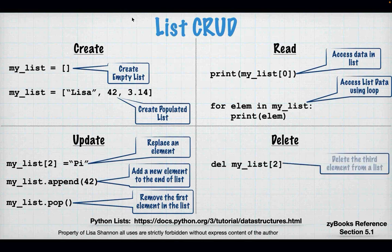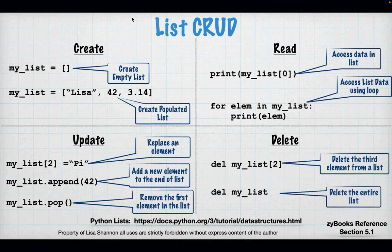For Delete: I can delete an element or an entire list using the 'del' keyword. When I have the variable name with an index — say, index two — I'm going to delete the third element from the list. If I want to get rid of the entire list, I can do 'del my_list'. So that's CRUD for lists: Create, Read, Update, Delete.